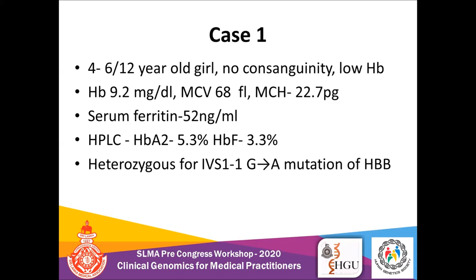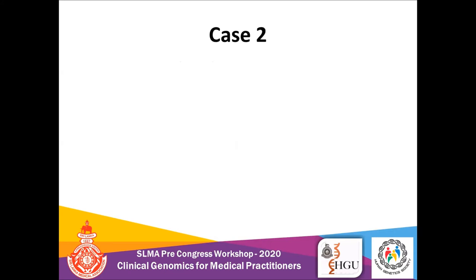This indicates she may be a carrier of beta thalassemia. Genetic studies by Sanger sequencing revealed she is heterozygous for one of the commonest mutations causing beta thalassemia in Sri Lanka. She has one normal gene and one affected gene, and therefore the amount of beta chains produced is less.